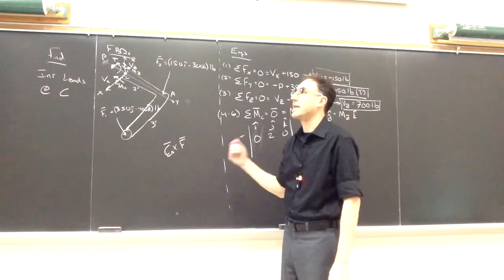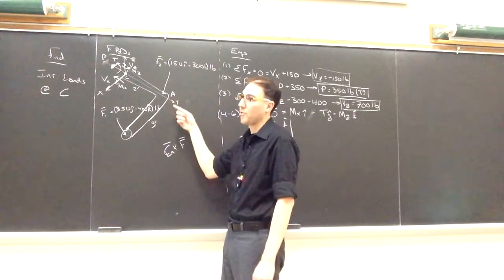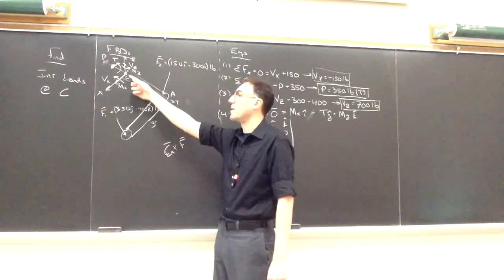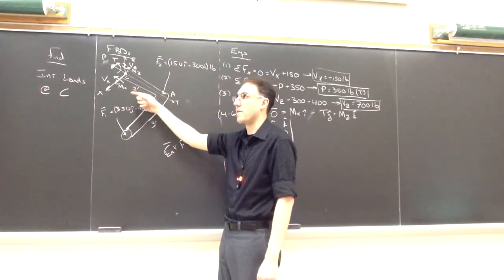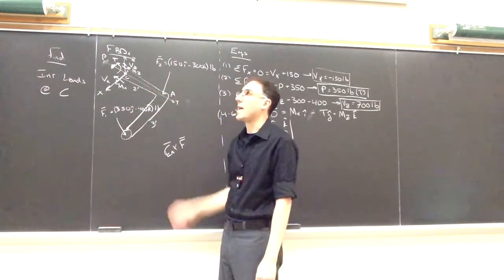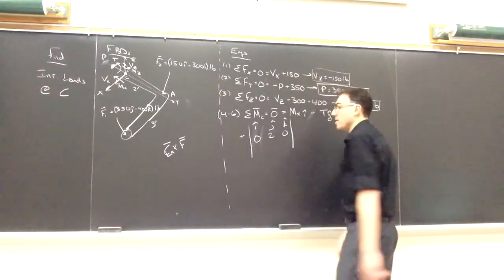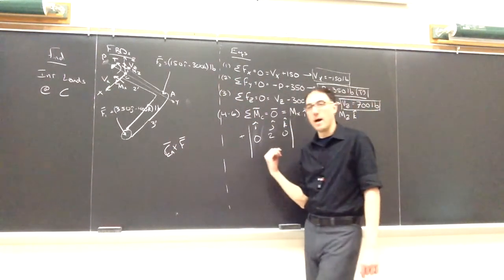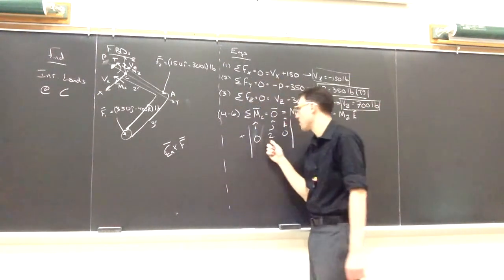So we want to take the, if we had a coordinate system down here, we would take A, the coordinates of A minus the coordinates of C would give us RCA. So in this case, A would be located at zero, three point five, zero. And point C, at least according to that coordinate system, would be located at zero, one point five, zero. So to go from C to A, we have to go two in the J direction. So again, coordinates of A minus the coordinates of C, I get zero, two, zero.